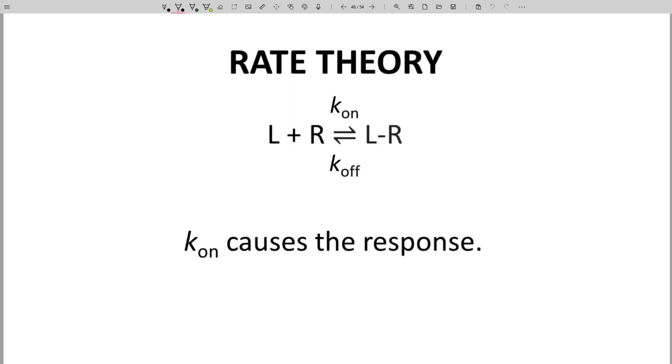Another theory is rate theory. Rate theory is about the kinetics of receptor binding. In rate theory, the receptor can be free or bound by the ligand. Neither the free nor bound form causes a response. The response occurs as the receptor is binding to the ligand. Therefore, the important action of the ligand is its initial contact with the receptor.